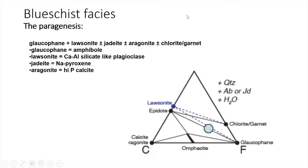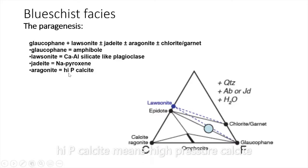Next comes the blueschist facies. The characteristic paragenesis is glaucophane + lawsonite + jadeite + aragonite ± chlorite or garnet. Glaucophane is an amphibole — so hornblende changes to glaucophane. Lawsonite is a calcium alumina silicate similar to plagioclase; jadeite is a sodium pyroxene; and aragonite is the high-pressure polymorph of calcite, also formed during blueschist facies.